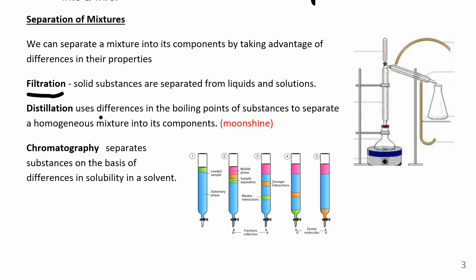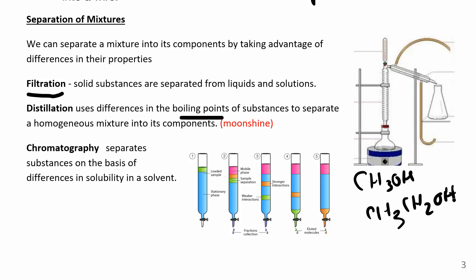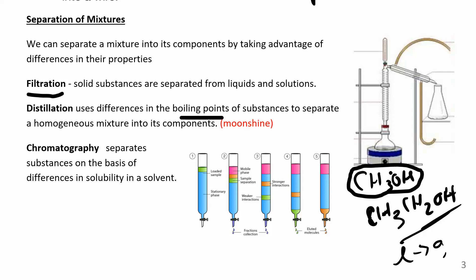Distillation is how you separate substances based on their boiling points. This is actually the first lab you do in organic chemistry. It's also how you make moonshine — you start with a mixture of methanol and ethanol. Ethanol is bigger, with more carbons and hydrogens, so it has stronger intermolecular forces, meaning it takes more energy to turn it from a liquid to a gas. The methanol, being smaller, has a lower boiling point and doesn't take as much energy to vaporize.